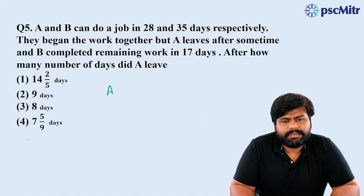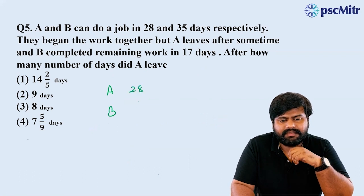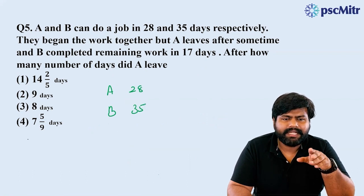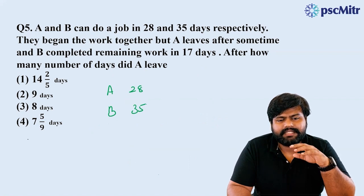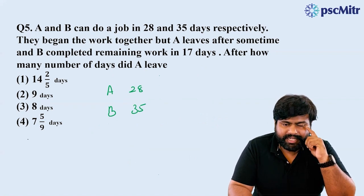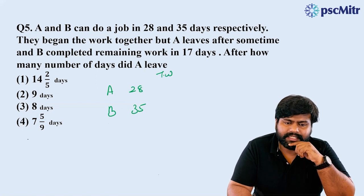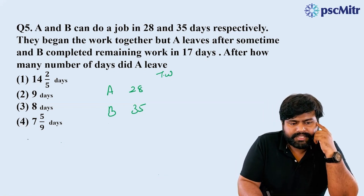Type 1 problem: A and B can do a job in 28 and 35 days respectively. They began the work together, but A leaves after some time, and B completed the remaining work in 17 days. After how many days did A leave? I told you to multiply this.